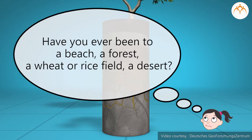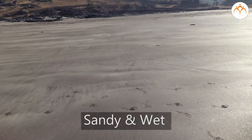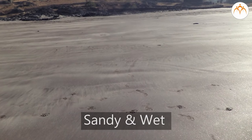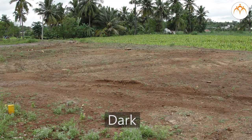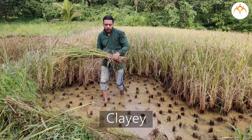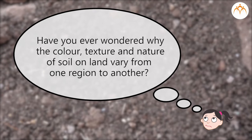Have you ever been to a beach, a forest, a wheat or rice field, or a desert? If you have visited such different places and paid attention to the land surface in these regions, you would have noted that soil there appears much different when compared. For example, the soil from a beach is very sandy and wet, whereas desert soil is sandy yet dry. Forest soil is usually moist with dark colour, and in rice fields it is clayey. Have you ever wondered why the colour, texture and nature of soil on land vary from one region to another? A variety of factors influence the formation of soil.